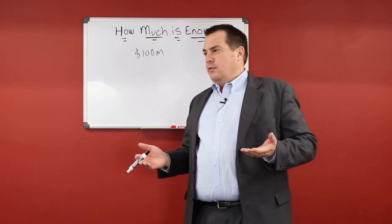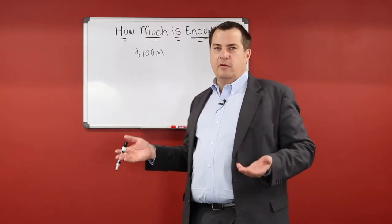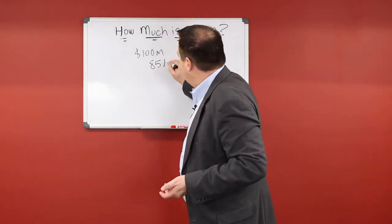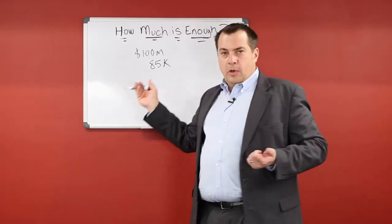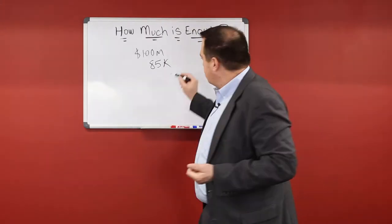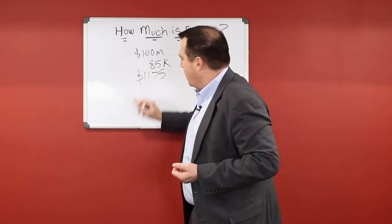So you ask yourself, well a hundred million dollars, how do I put that in perspective? Well there's 85,000 households in the City of Fort Wayne. A hundred million dollars over 85,000 households comes to about eleven hundred seventy-five dollars.